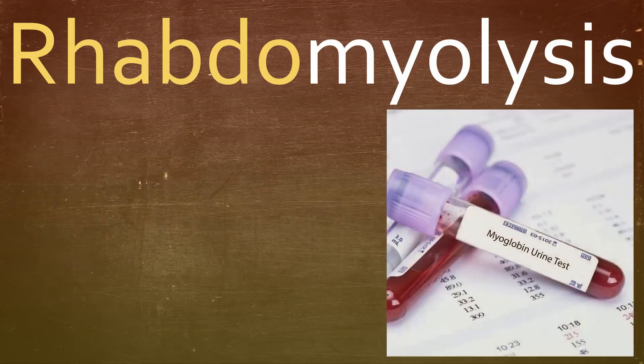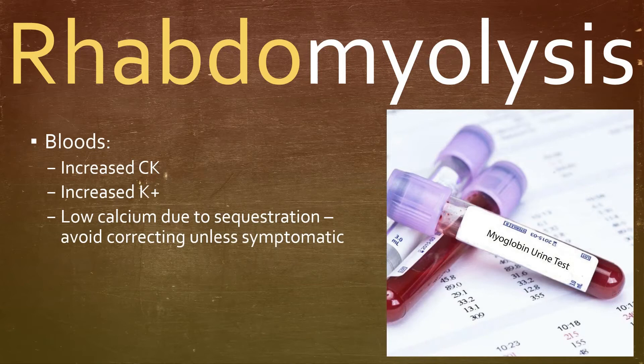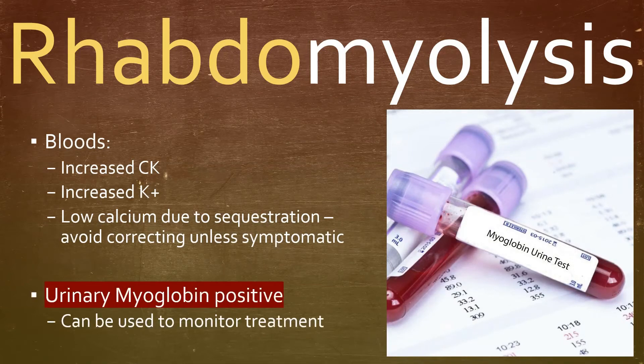So what do the bloods show in these types of patients? Increased CK, increased potassium, and low calcium. Urinary myoglobin is positive in these types of patients and is used to monitor treatment.